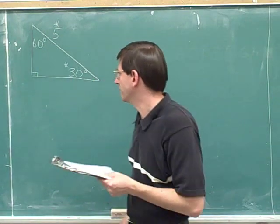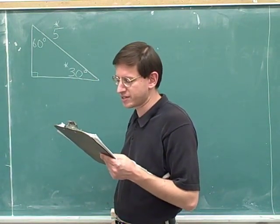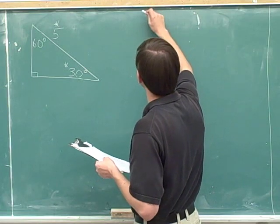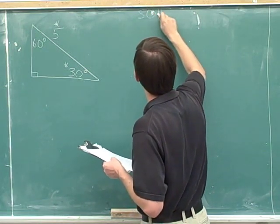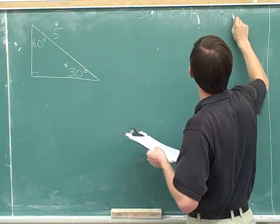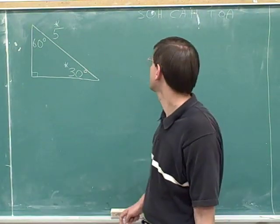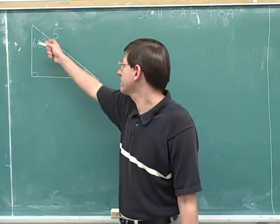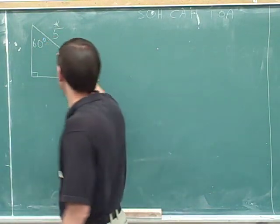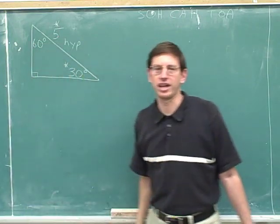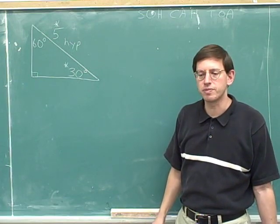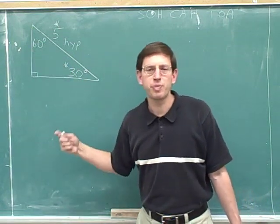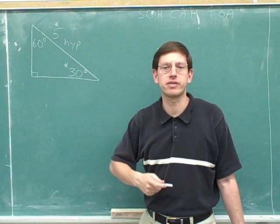It wasn't very hard to find that remaining angle, but it'll take a little more work to find the sides. I'm going to write down SOH CAH TOA so we don't forget that key idea. In order to use trigonometry, we need to label which sides are the hypotenuse, adjacent, and opposite. The side with the asterisk and length 5 is clearly the hypotenuse, because it's opposite the 90-degree angle. Which side is adjacent and which is opposite depends on which angle we're focusing on — the 30 or the 60.